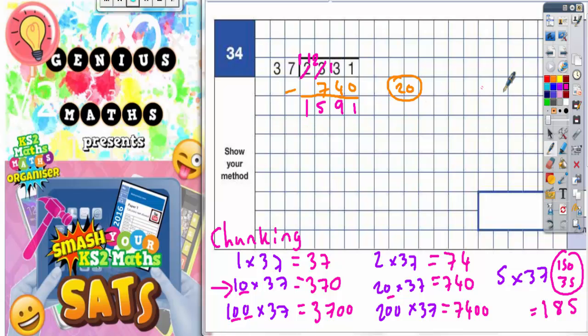At this point you might think, well, I'll just take off another 20 lots which is 740. But actually you could take this 740 and double it to get 40 lots of 37, because double 20 lots is 40 lots. Double 740 is 1480.